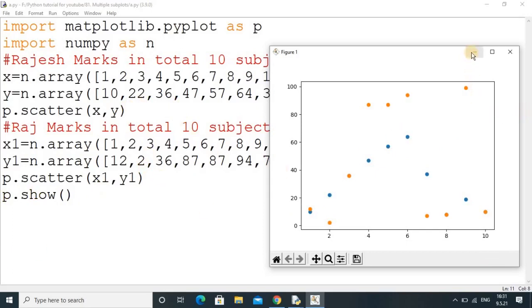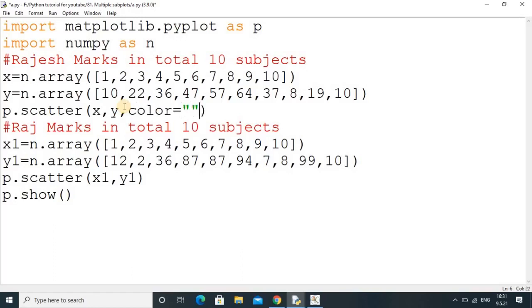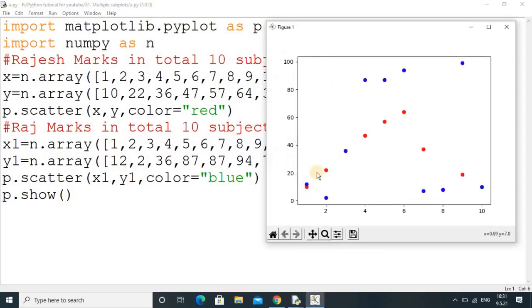Now we will change the color. You can put the color value here, whichever you want. I will write this third parameter; you can put in single or double quotes. My first color will be red. Here also you do the same; I will add blue. Now I will run this. You can observe we have changed the color of these dots.